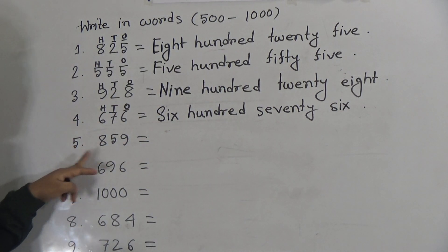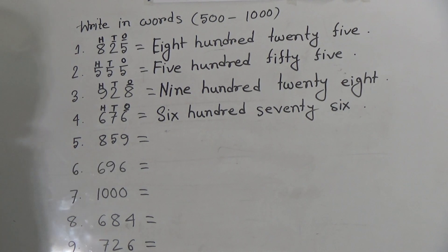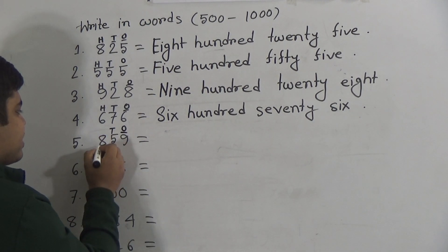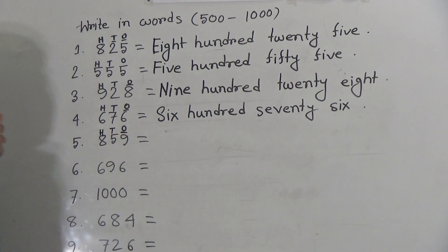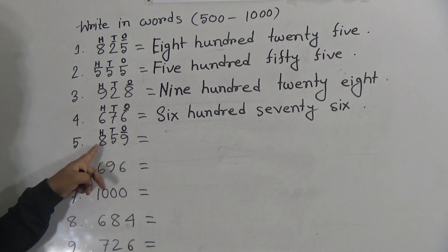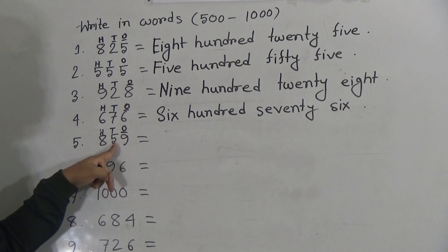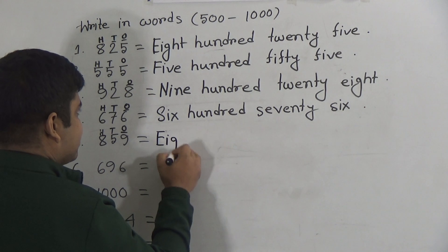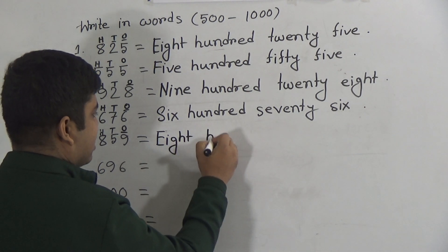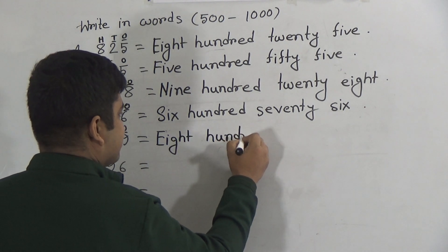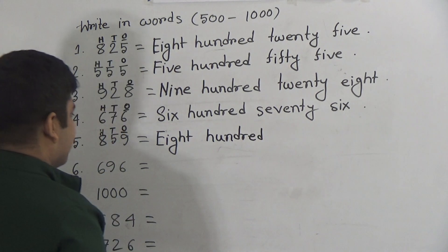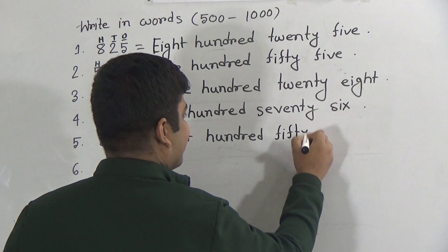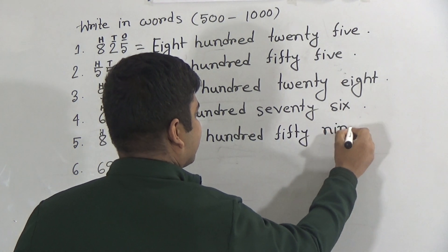Next, number 5: 8, 5, 9. Here 9 is in the 1's place, 5 is in the 10's place, and 8 is in the 100's place. So we read this number as 859. Write: E-I-G-H-T, 8 hundred — H-U-N-D-R-E-D. Eight hundred. Then 59: F-I-F-T-Y. Fifty-nine.